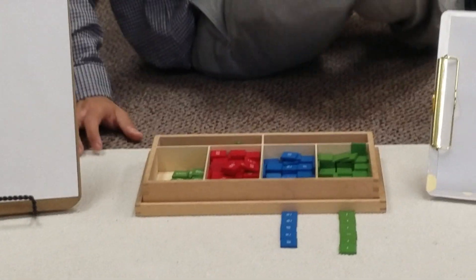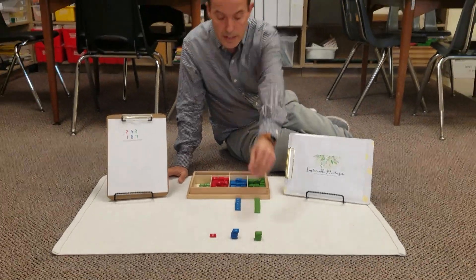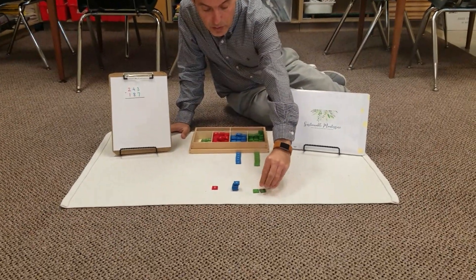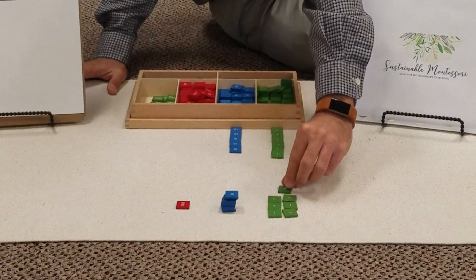So now the students can check if we did the problem right. How can we check that? We're going to count actually the number that we have here in the bottom. 1, 2, 3, 4, 5, 6, 7 units.